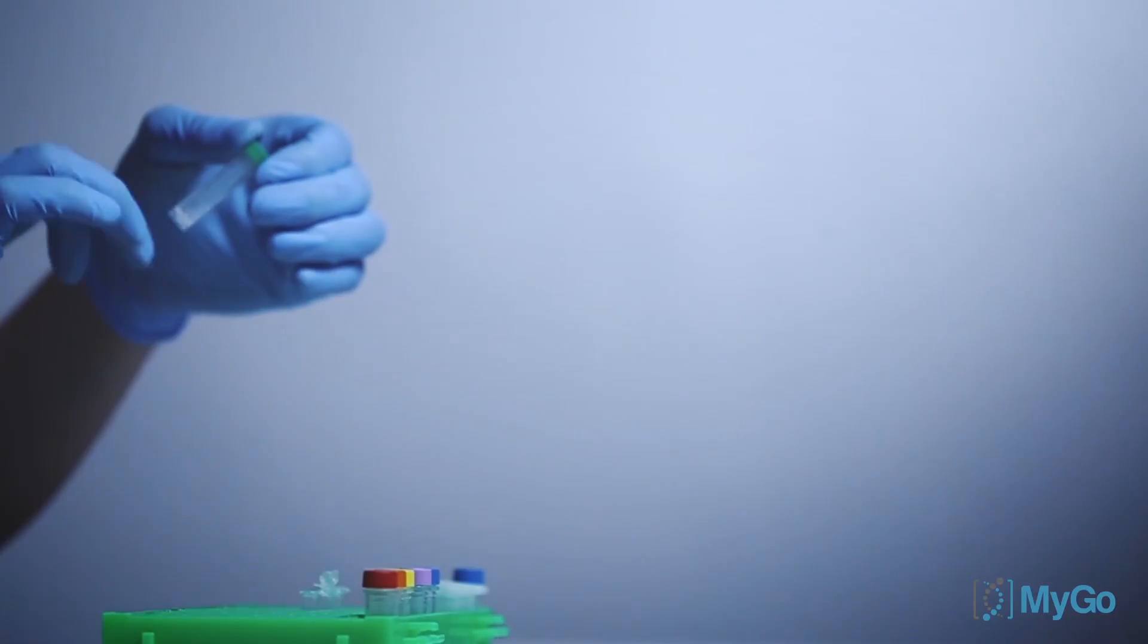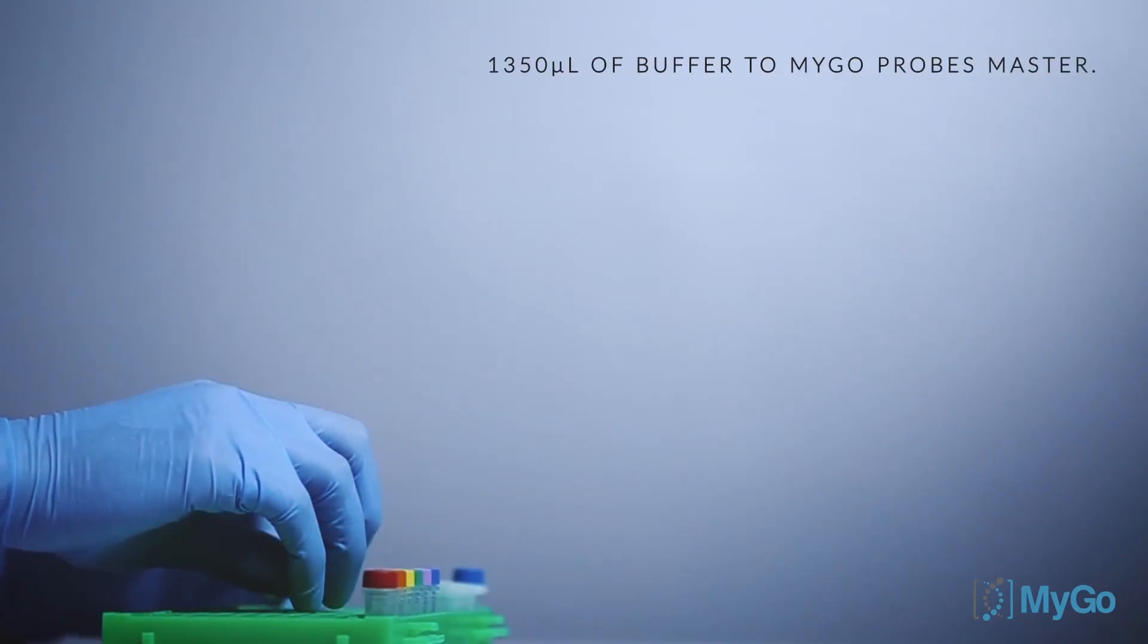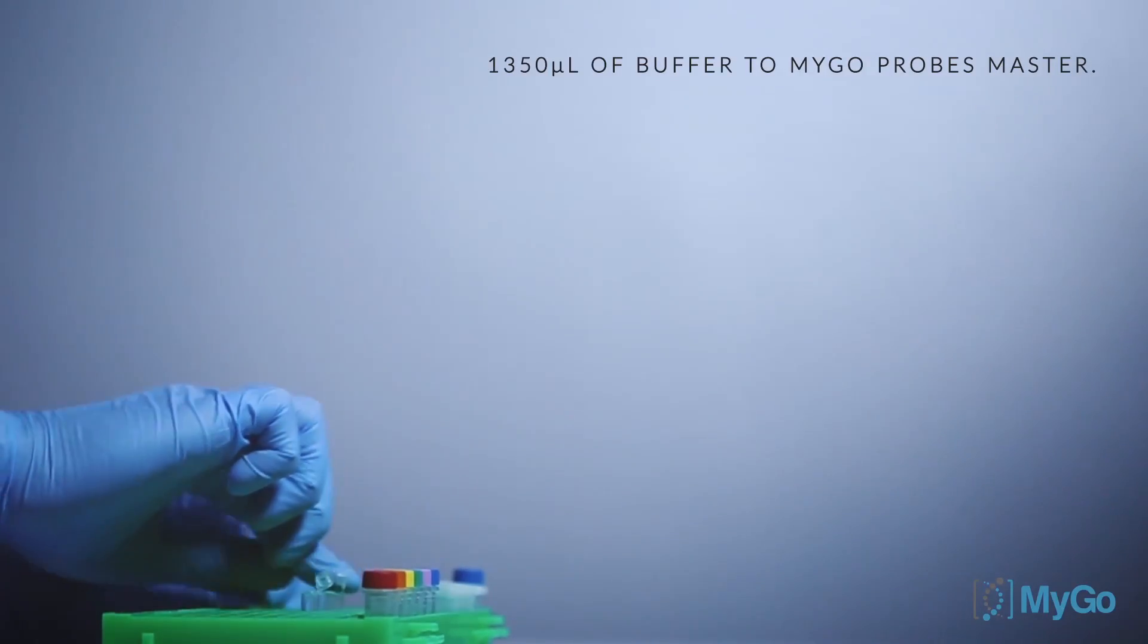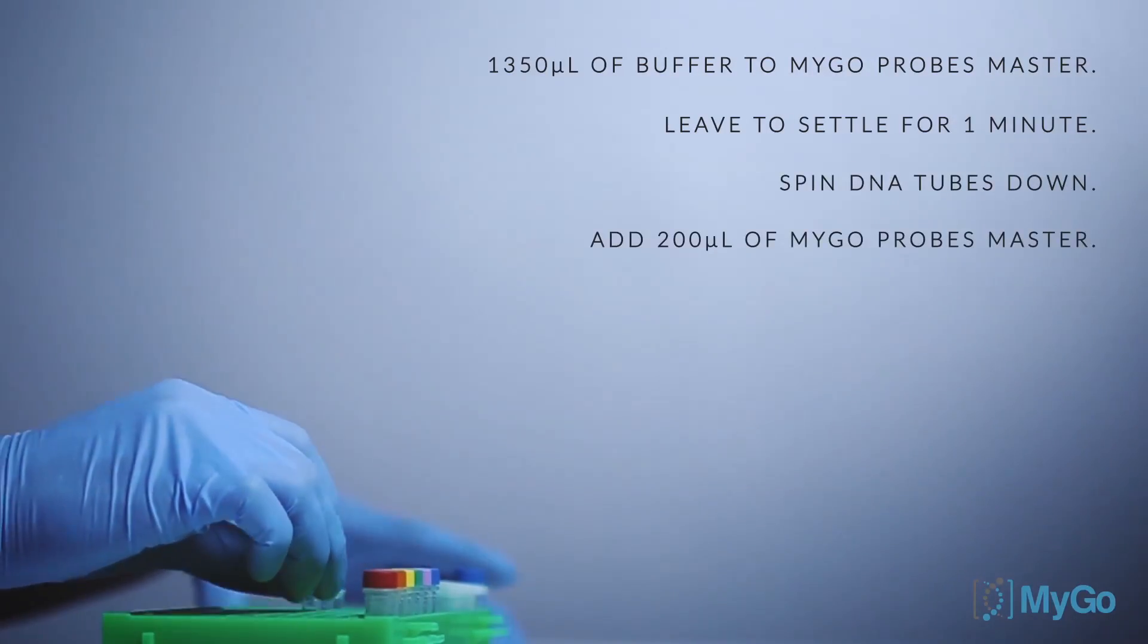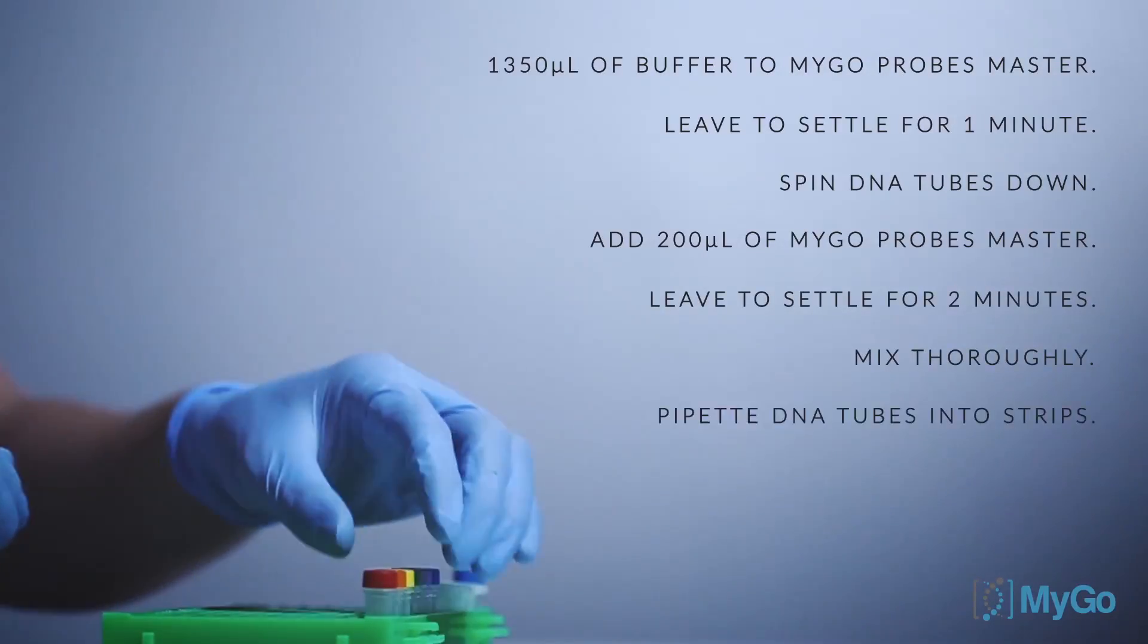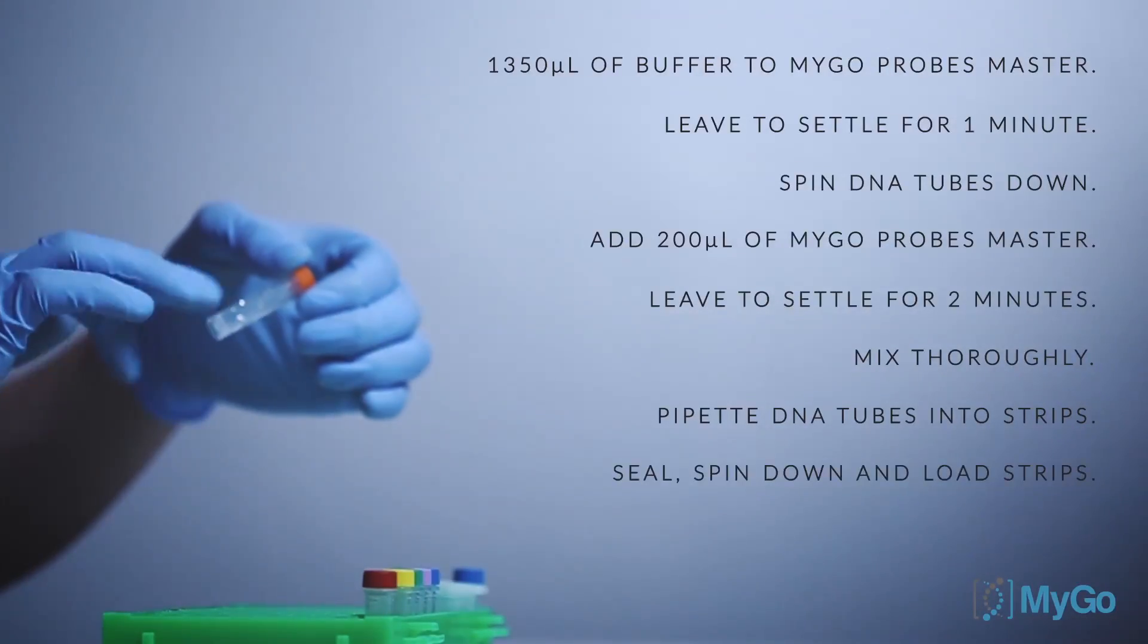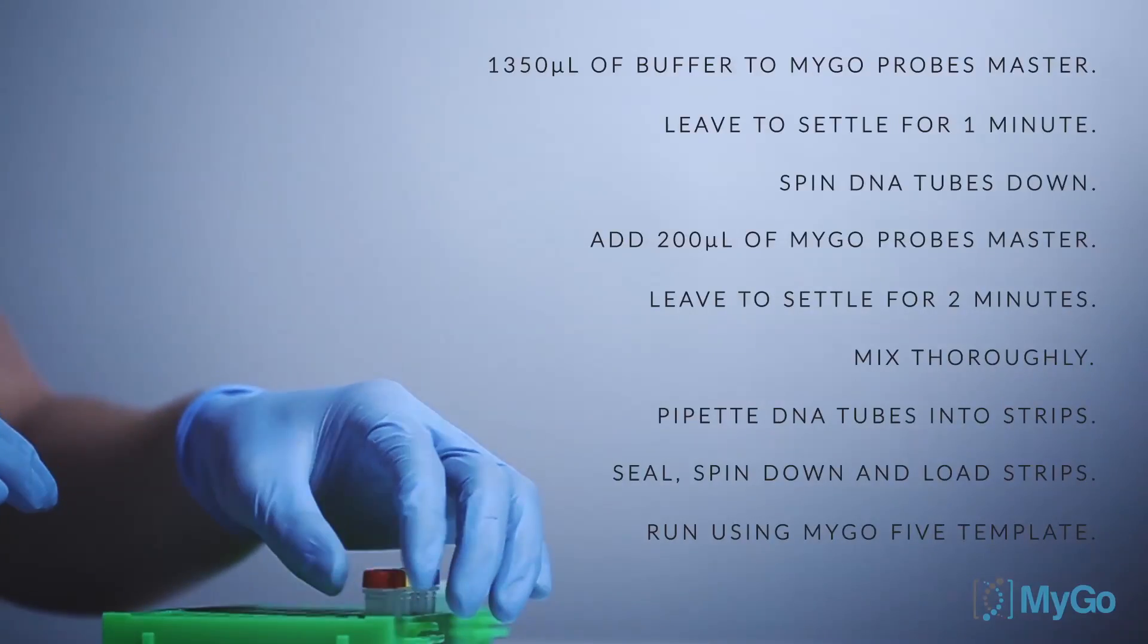To summarize, the MYGO5 reaction preparation procedure involves the following steps. Add 1,350 microliters of buffer to the vial of MYGO Probe's master and leave it to settle for one minute. Spin DNA tubes down and then add 200 microliters of MYGO Probe's master. Leave to settle for two minutes, then mix thoroughly. Pipette DNA tube contents into MYGO 8-well strips, seal the strips, then spin down the strips and load them into the MYGO Pro. Start the run using the MYGO5 software template.